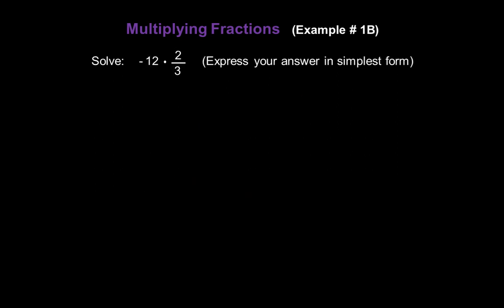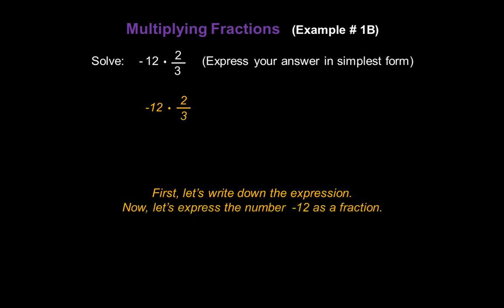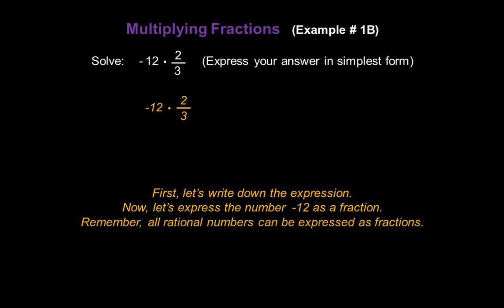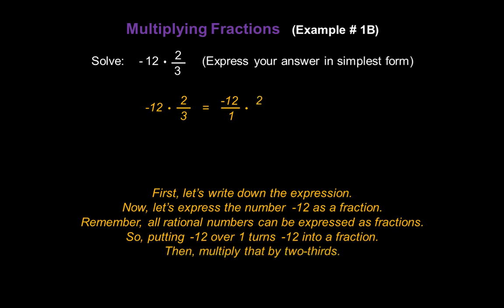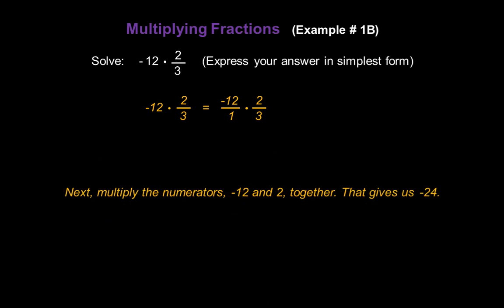Now let's solve negative 12 times 2/3. First, write down the expression negative 12 times 2/3. Let's express negative 12 as a fraction — all rational numbers can be expressed as fractions, so putting negative 12 over 1 turns it into a fraction. We rewrite the problem as negative 12 over 1 multiplied by 2/3. Now multiply the numerators: negative 12 and 2 together give us negative 24 in the numerator.